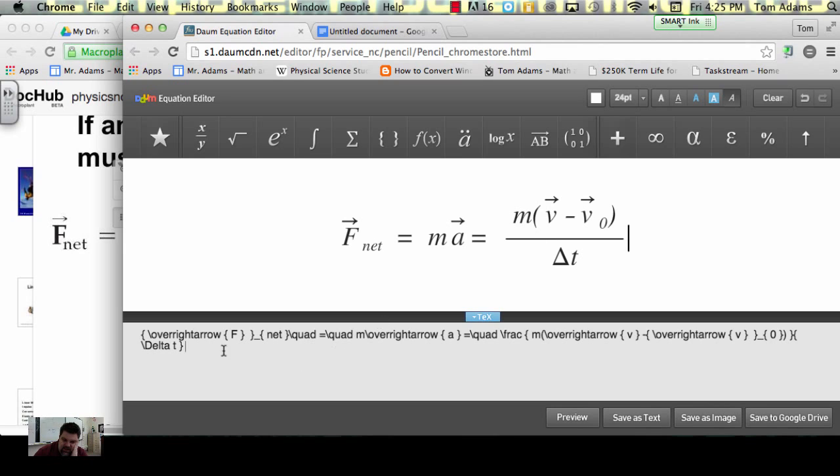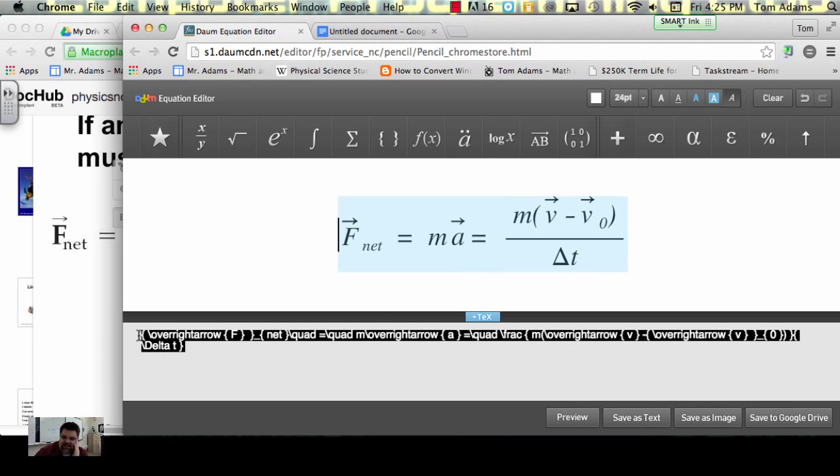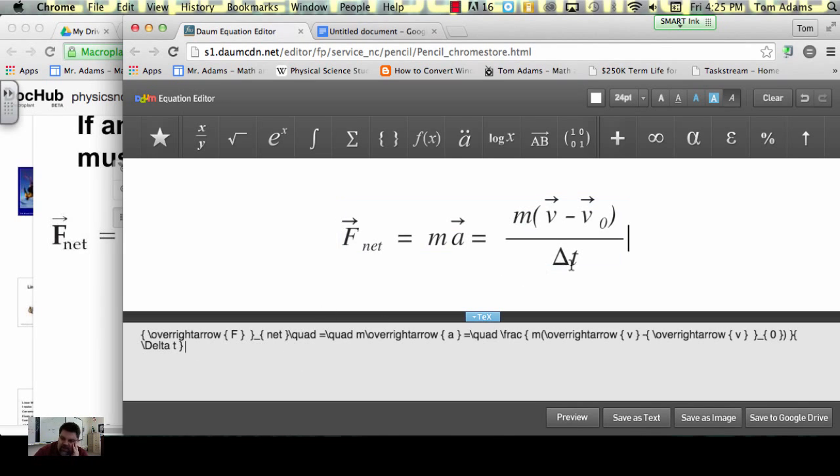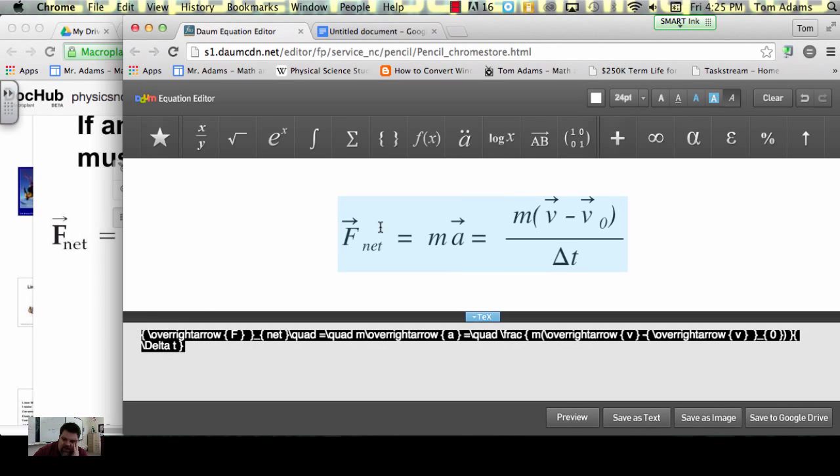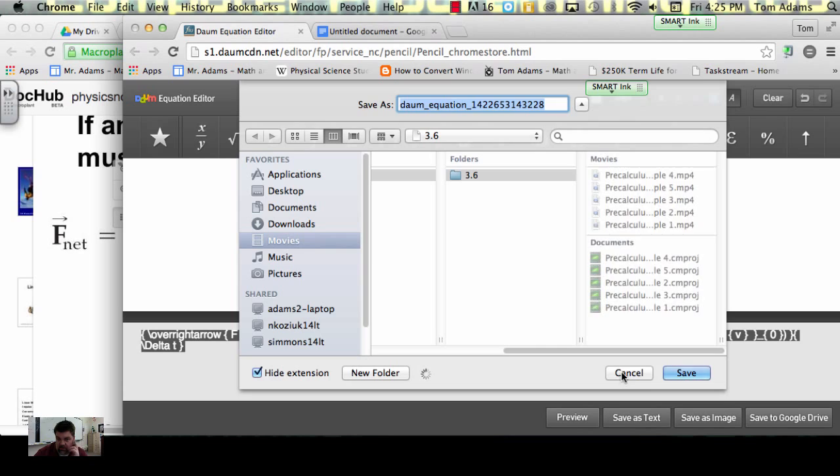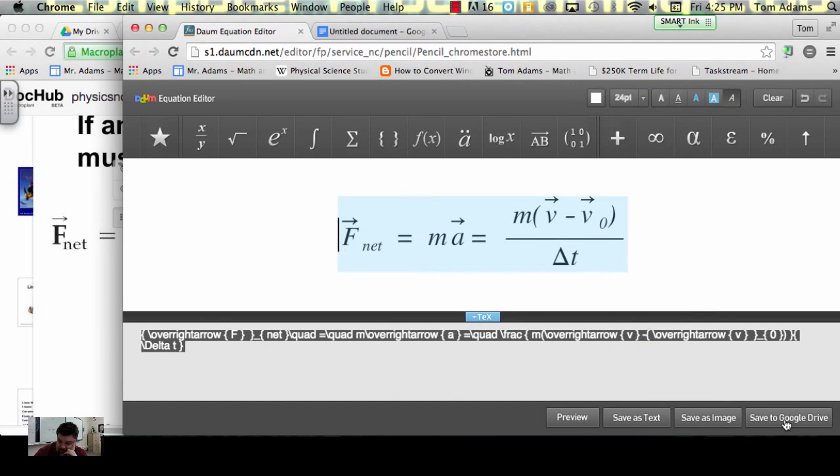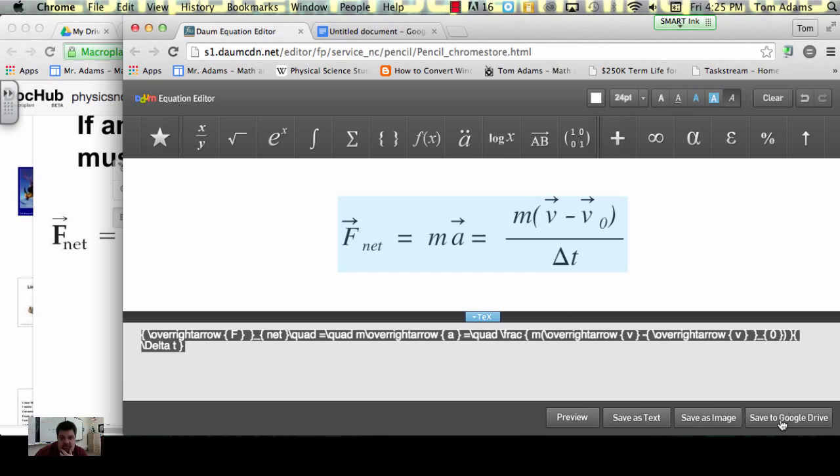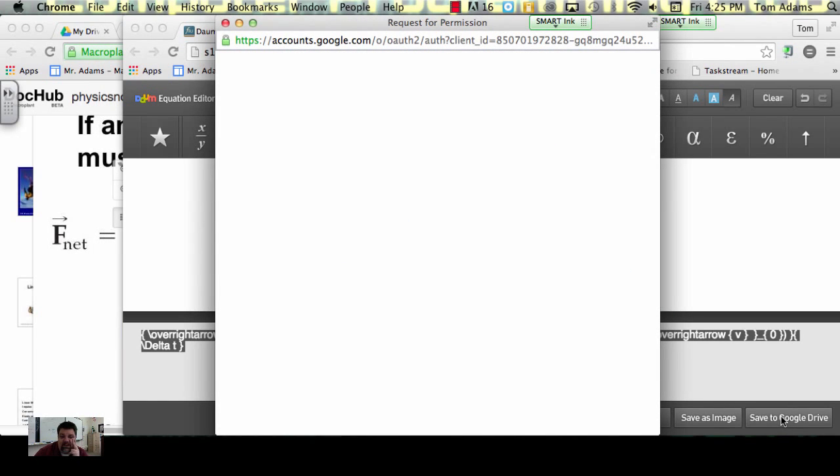Now there's two ways I can handle this. I can't copy this latex and put it into Google Chrome. And if I copy this, it won't. I basically have to save it as an image. And I can save it as an image to my Google Drive. So if I click on save image, it's going to want to save it on my computer. And it will look a little different for you than it does for me. If I click it to my Google Drive, it's going to save it.